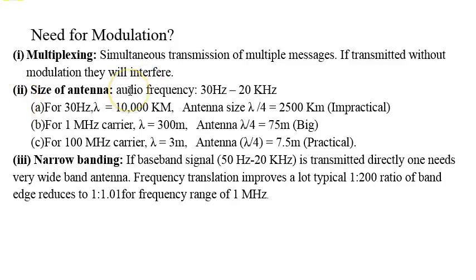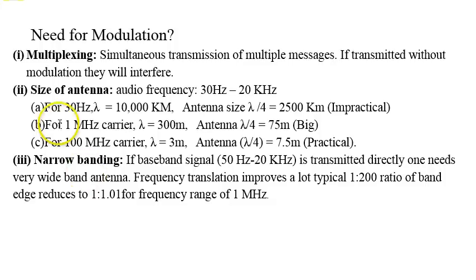Another reason is antenna size. The audio frequency range at baseband lies within 30 Hz to 20 kHz. For example, at 30 Hz the wavelength is 10,000 km, giving an antenna size of about 2,500 km — not practical. At 1 MHz, the antenna size comes to about 75 meters, which is manageable. As frequency is increased, the corresponding antenna size comes within practical limits. At baseband frequencies, you really cannot use an antenna if trying to transmit without modulation.